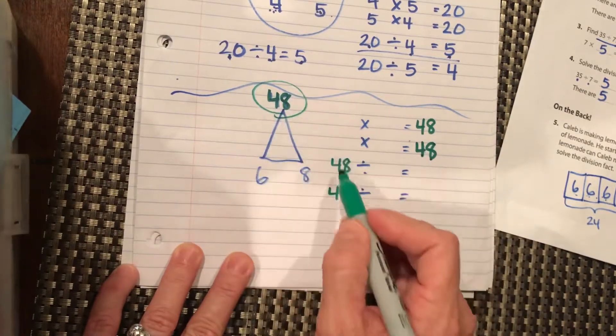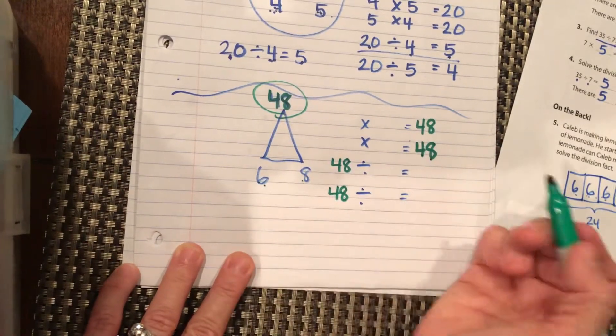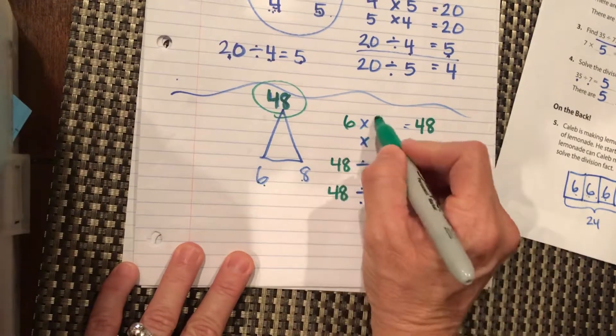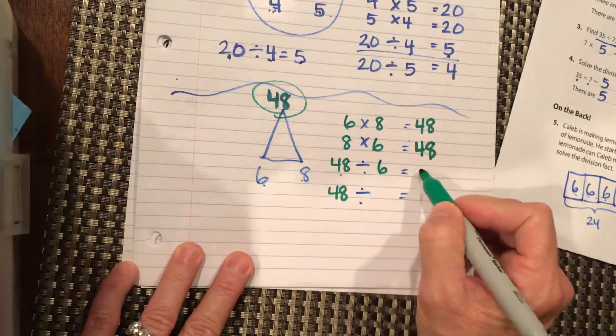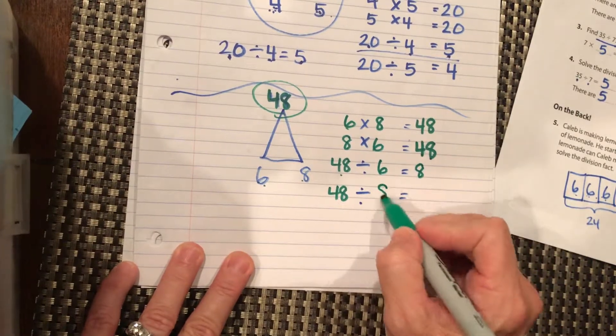Then we take these two numbers, and they can be flip-flopped. 6 times 8 is 48, 8 times 6 is 48, 48 divided by 6 is 8, 48 divided by 8 is 6.